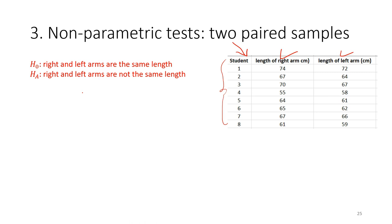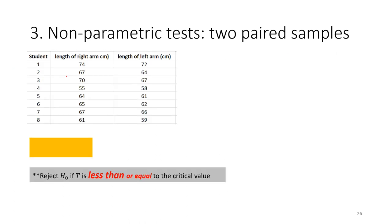The first step is to formulate the statistical hypothesis. As with other non-parametric tests, we do not use parameters in the hypothesis. The null hypothesis is that the right and left arms are the same length. The alternative hypothesis is that the left and right arms are not the same length.